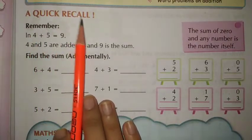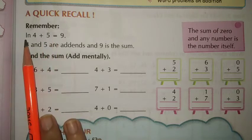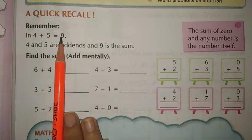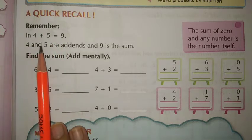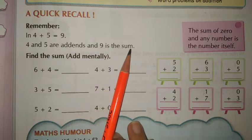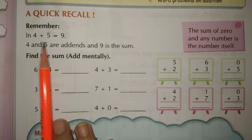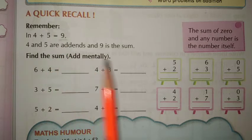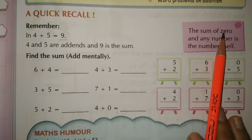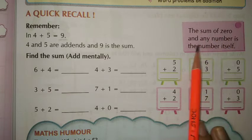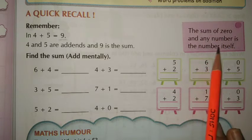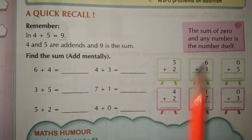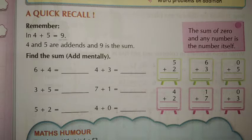A quick recall. Remember, in 4 plus 5 equals 9, the numbers 4 and 5 are added and 9 is the sum. 4 और 5 को हम add करते हैं, तो जो sum आता है वो है 9. The sum of 0 and any number is the number itself. अगर कोई भी number में हम 0 add करें, तो वही number answer आएगा.